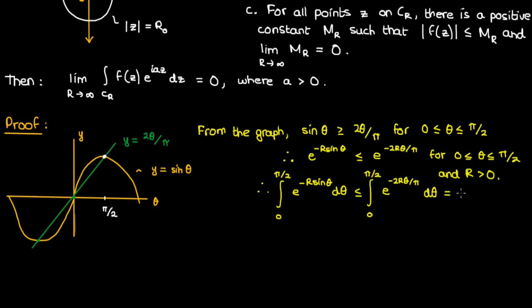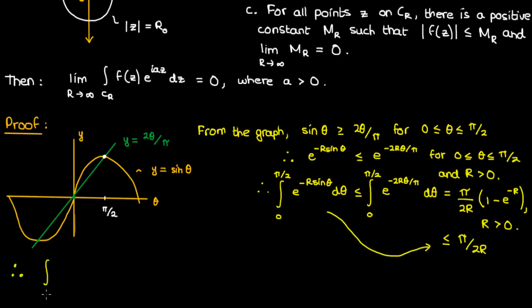You can actually compute this latter integral, and when you do you'll get π/(2R) times (1 minus the exponential of negative R), where R is greater than 0. And since R is greater than 0 you can safely say that this quantity is also less than π/(2R), because the exponential of a negative number is a positive number less than 1, and 1 minus that multiplied by π/(2R) ends up being less than π/(2R). Therefore the integral from 0 to π/2 of the exponential of negative R·sin θ is less than or equal to π/(2R).